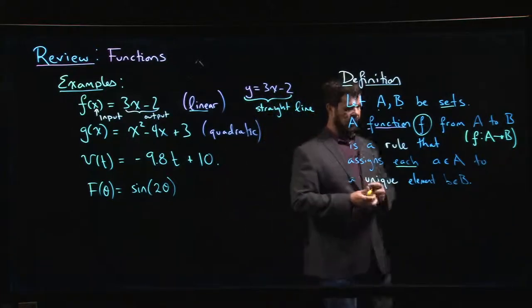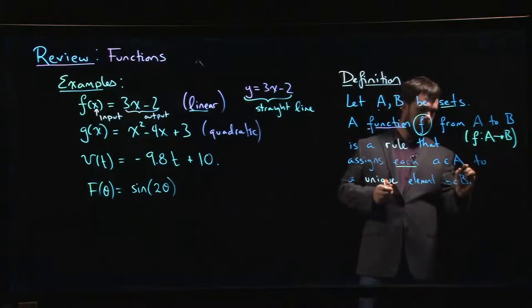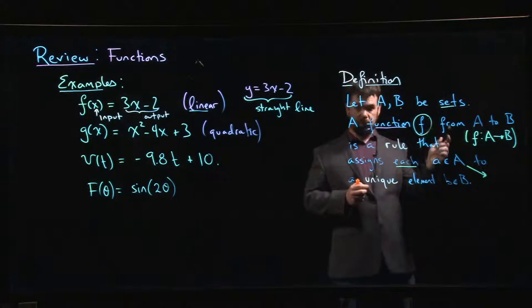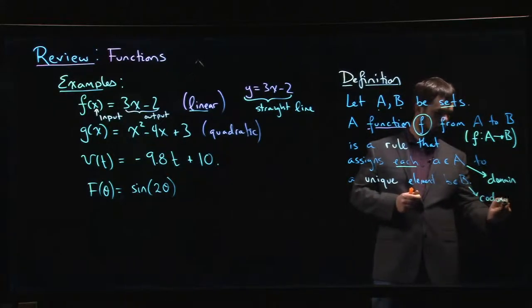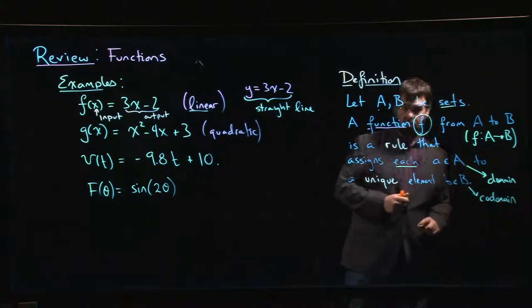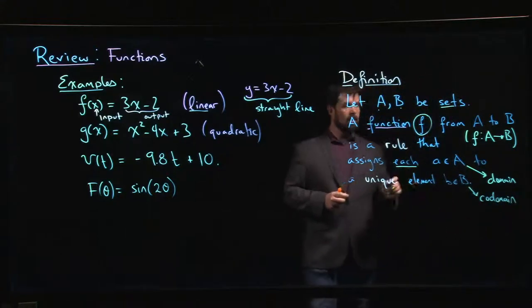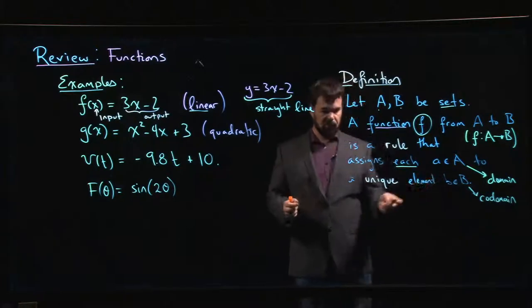A few bits of terminology before we move on. The set A, so the set from which the inputs come, this is known as the domain for your function. The set B is known as the codomain.